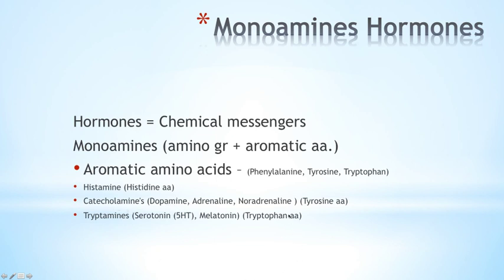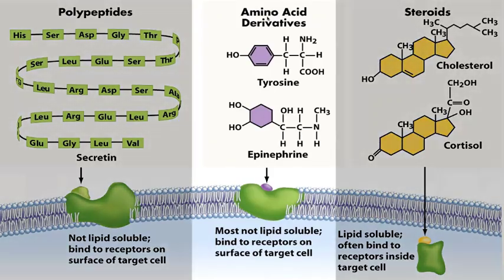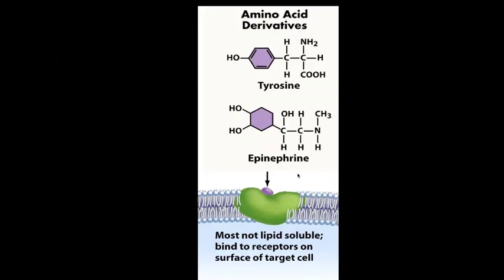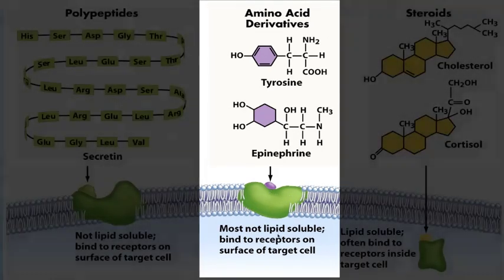Tryptamines come from tryptophan and produce serotonin — also known as 5-hydroxytryptamine or 5-HT — which is important for well-being and happiness, and melatonin, which regulates our circadian cycle including sleep and awareness. Their mode of action is as in the case of epinephrine, a catecholamine derived from tyrosine. Like polypeptides, epinephrine is not lipid-soluble, so it requires a receptor on the cell surface because it cannot cross the lipid bilayer.